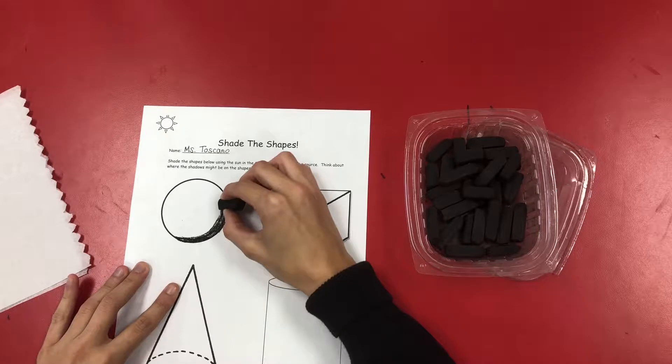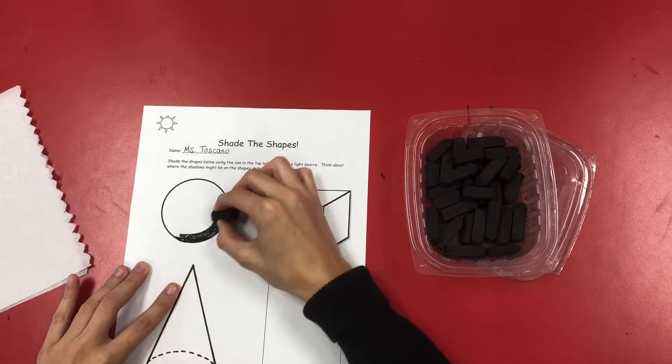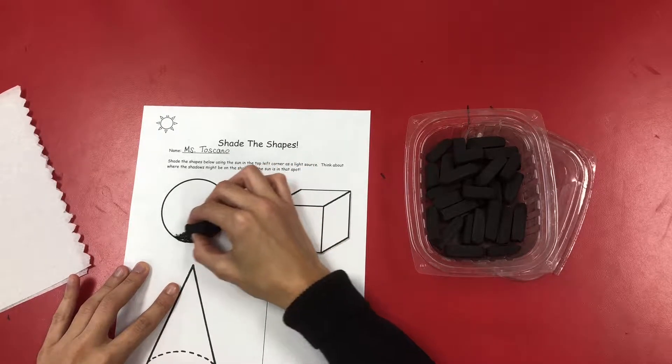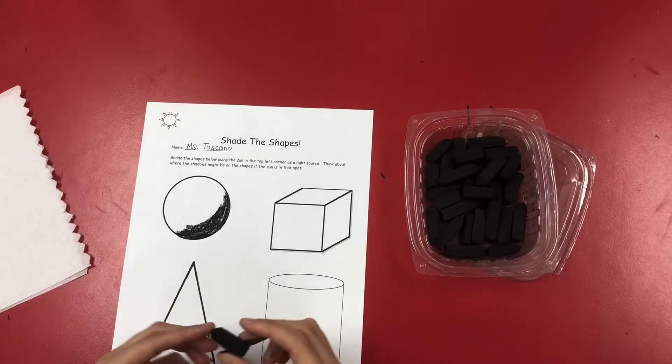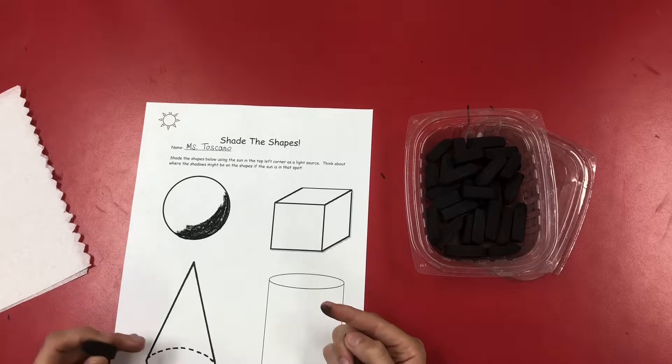I'm going to draw in the area opposite where the sun would be, and I'm not going to fill in the entire shape with the charcoal because now is when I'm going to actually blend it out.